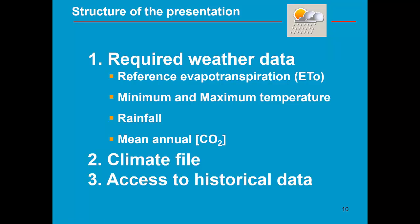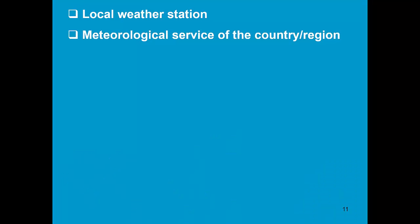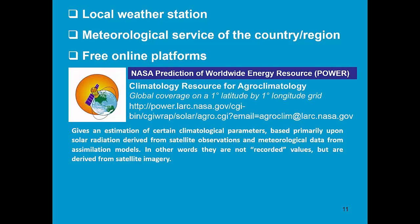In the last point of this training module, we discuss the access to historical data. Data is collected from the local weather stations or from the meteorological surface of the country or of the region. In the absence of weather data, one can try also to find the data on online platforms.